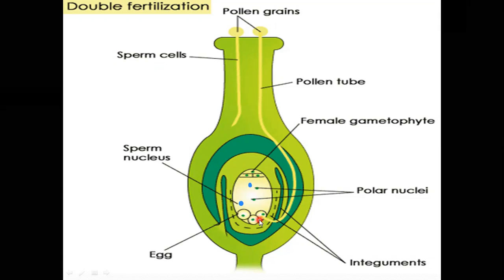After entering one of the synergids, the pollen tube bursts and releases the two male gametes into the cytoplasm of the synergid cell.